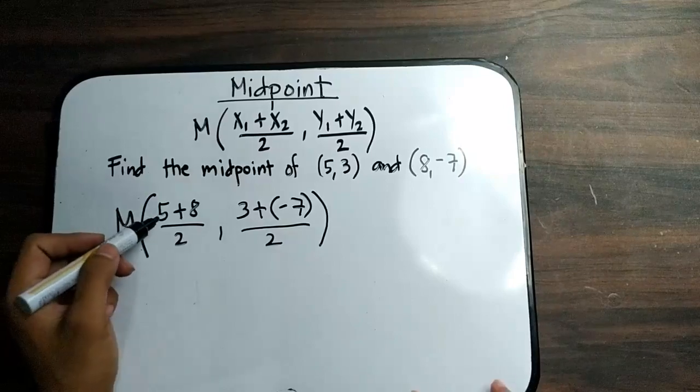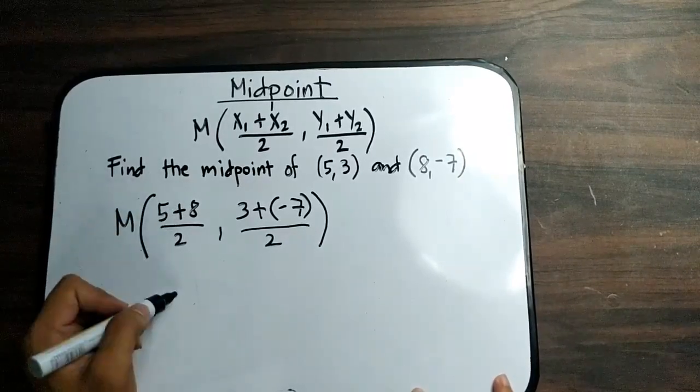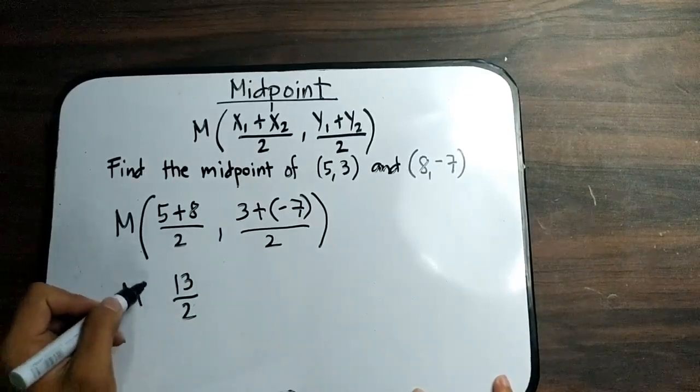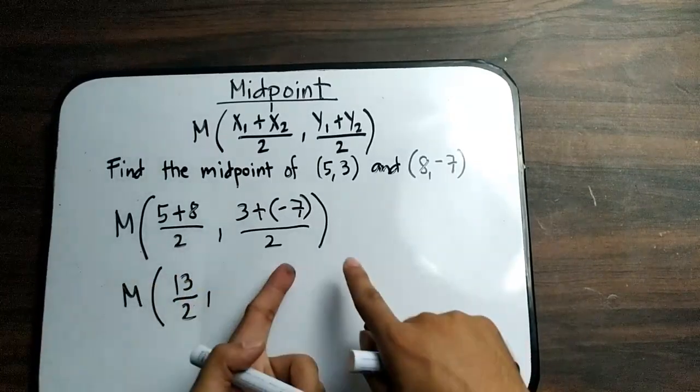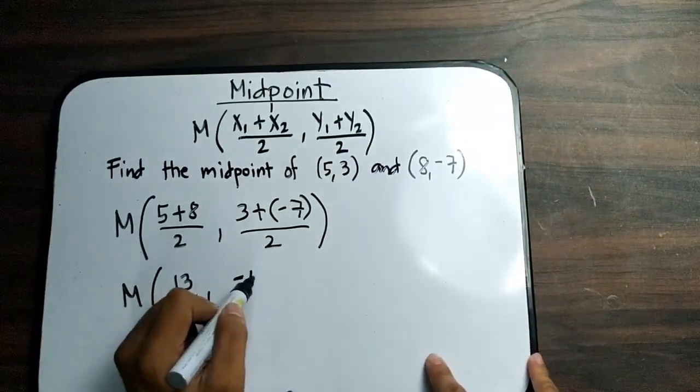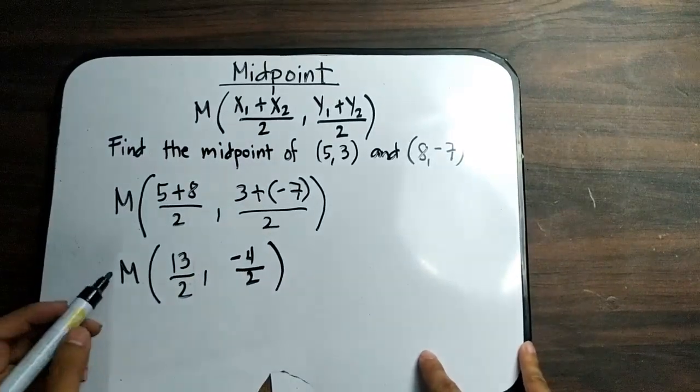You need to simplify this. You have 5 plus 8, which is 13 all over 2. And then for this part of your y coordinate, we have 3 plus negative 7, which gives you negative 4 over 2. To simplify your answer as the midpoint, it will give you...